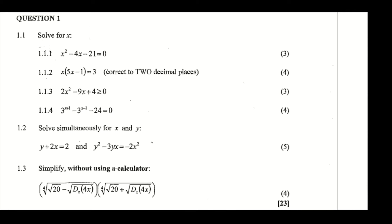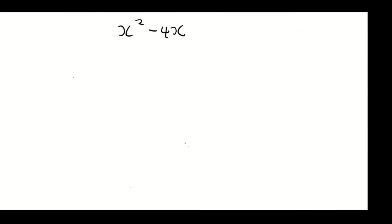Now we're going to do question one, 1.1.1. We're going to solve for x for this problem here. So we have x squared minus 4x minus 21 is equal to zero.